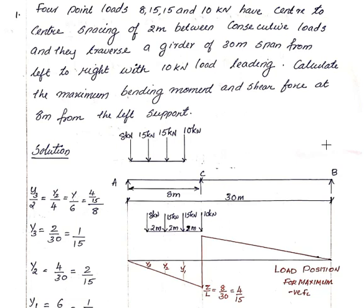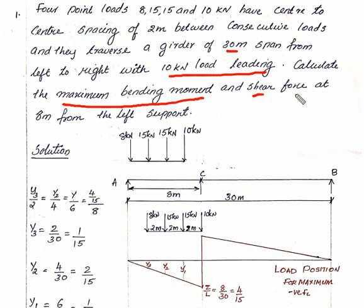Train the first problem. Four-point loads 8, 15, 15, 10 kN have center-to-center spacing of 2 meters between consecutive loads and they traverse a girder of 30 meters span from left to right with 10 kN load leading. Calculate maximum bending moment and shear force at 8 meters from left support.